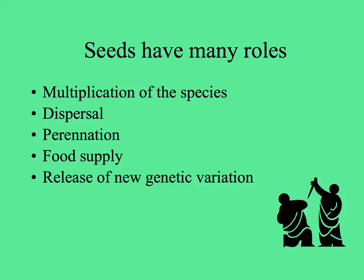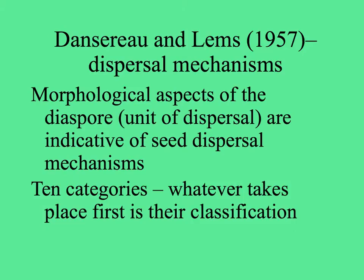A seed brings with it a food supply for the baby plant inside the embryo and, especially if they result from sexual reproduction, they bring new genetic varieties. It's interesting to look at seeds and fruits — the dispersal mechanisms of these diaspores — using the system of Dancero and LEMS. They categorize these things with morphological aspects of the unit of dispersal and correlate these with the seed dispersal mechanism. They have ten categories, and even though something might be dispersed more than one way, whatever takes place first is their classification.